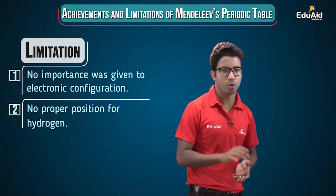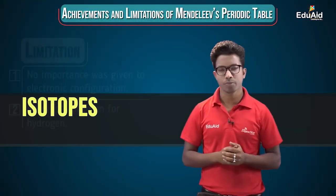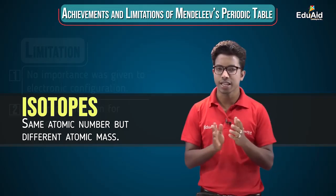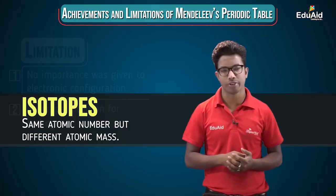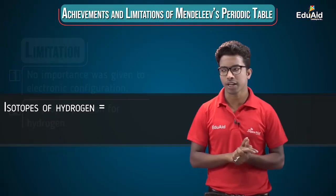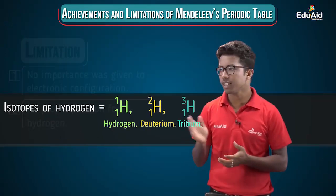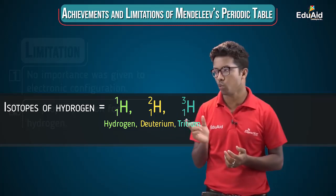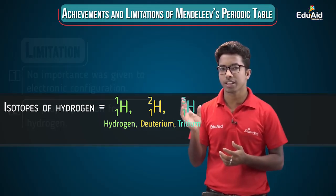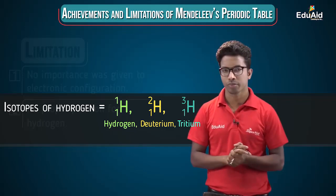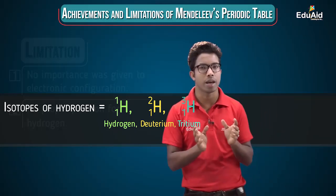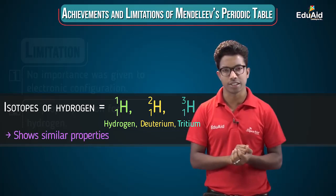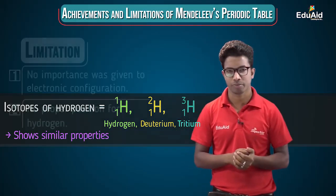The next limitation relates to isotopes — elements having the same atomic number but different atomic mass. Since they have the same atomic number, they are the same kind of atom, but with different atomic masses. For example, hydrogen exists as three isotopes: hydrogen, deuterium, and tritium, with atomic numbers all equal to 1 but atomic masses of 1, 2, and 3 respectively. The chemical and physical properties of isotopes of the same element are similar.